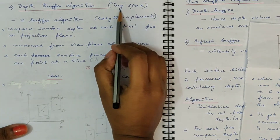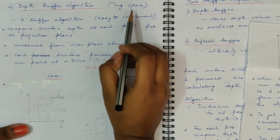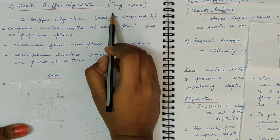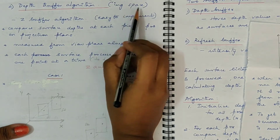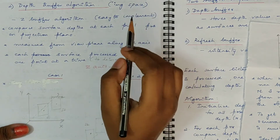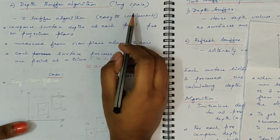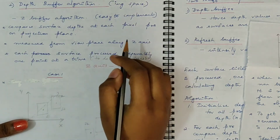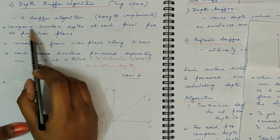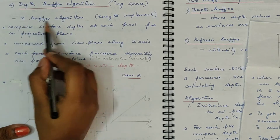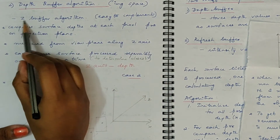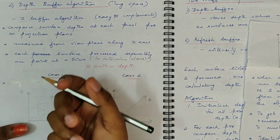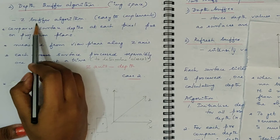This is one of the image space methods. The visible surface detection methods can be classified either as object space or image space. In image space methods, the pixel positions are used to determine whether it falls under visible or not visible. This depth buffer algorithm is also called the Z-buffer algorithm, because you actually use the Z axis — you are calculating the depth of each pixel position along the Z axis. Hence the name Z-buffer algorithm.